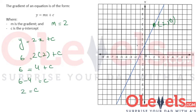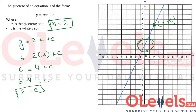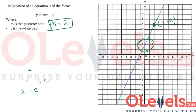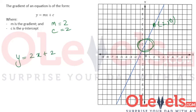So the y-intercept of this line is 2. We could have also found the y-intercept by looking at the graph, but we might not always have the graph, so we should know how to find the y-intercept using a point. We have the gradient as 2 and the y-intercept as 2, so plugging these values in, we get y is equal to 2x plus 2. This is the equation of this particular line.